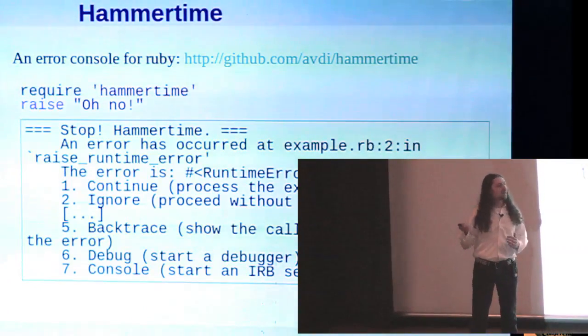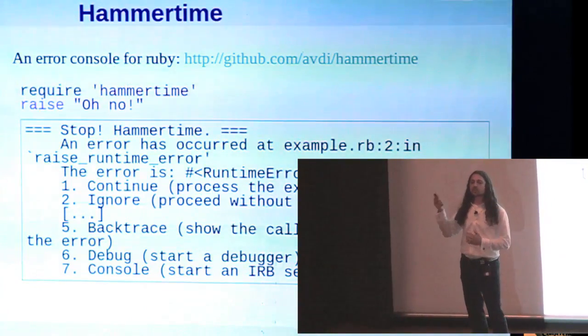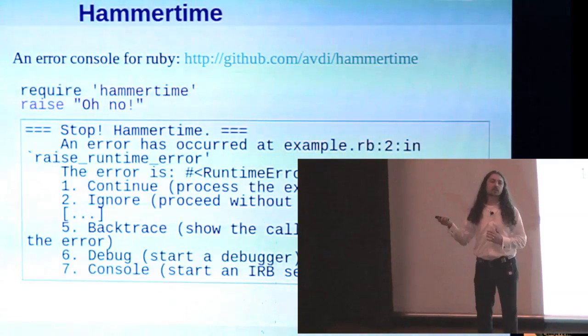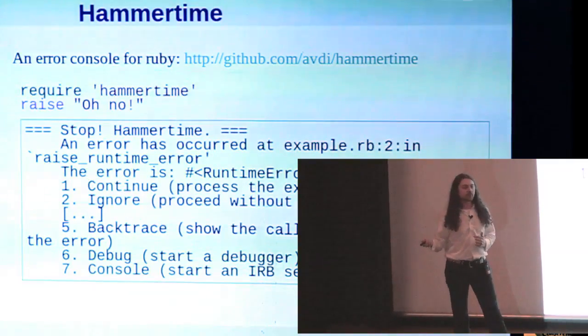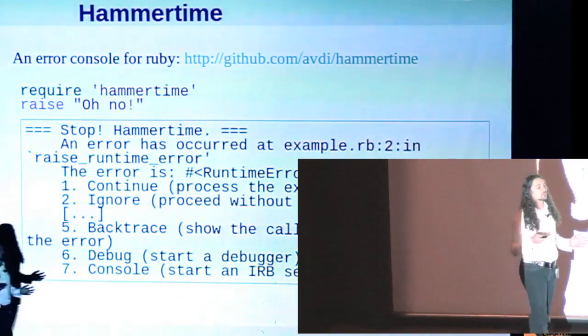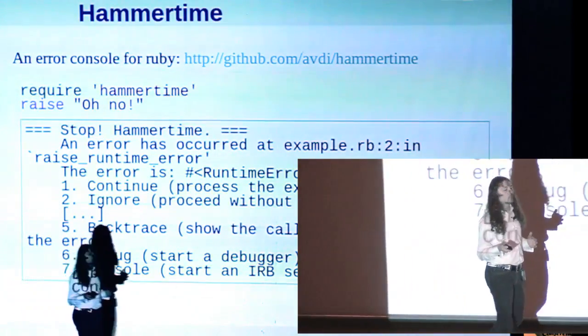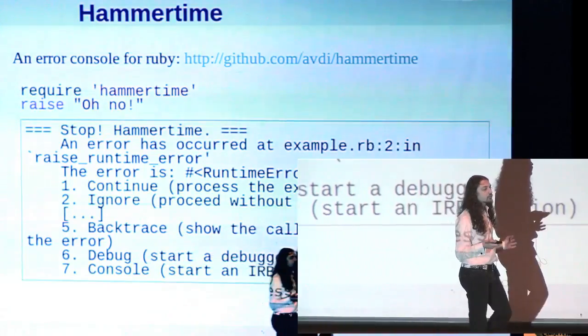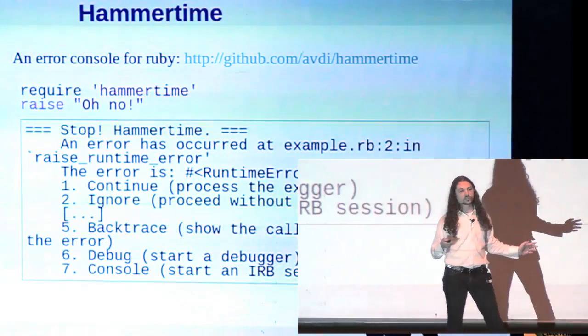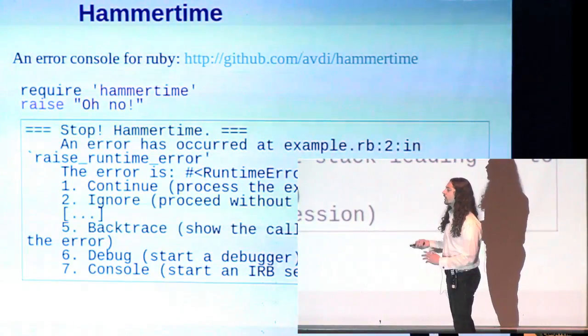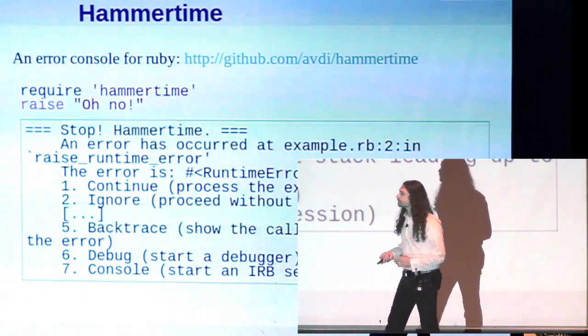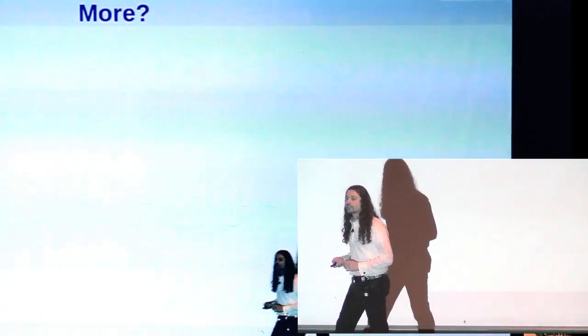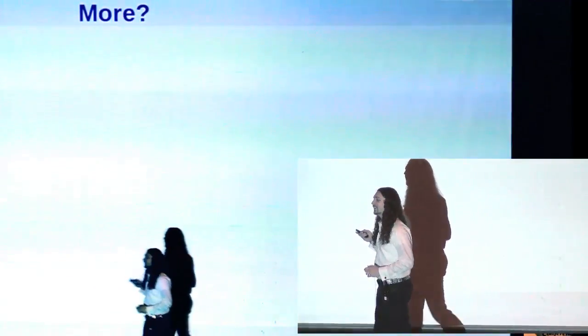For a potentially more interesting use of this fact, you might want to take a look at my Hammer Time gem. Hammer Time is an attempt to add a Lisp or Smalltalk style error console to Ruby. So at the point where the exception is raised, it will give you the option to ignore the exception, to continue raising the exception, to drop into a debugger at the point where the exception was raised, drop into a console, a bunch of other stuff. More? All right.